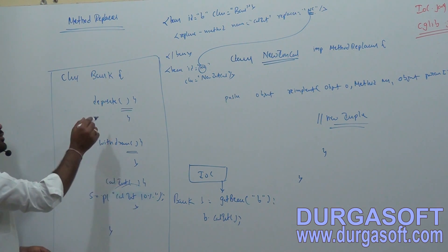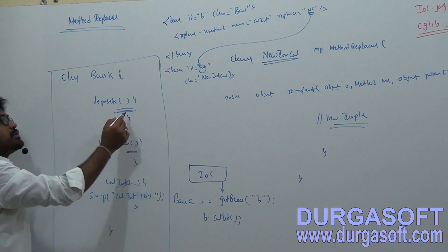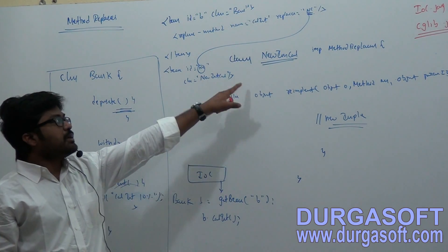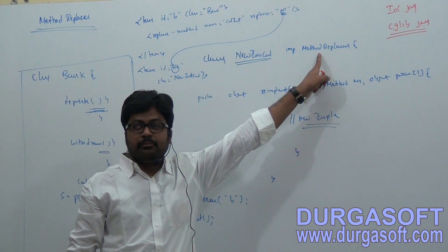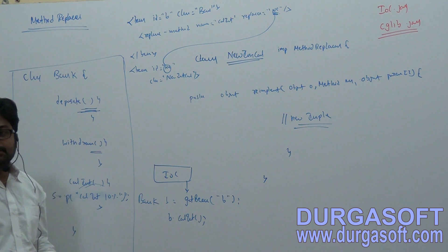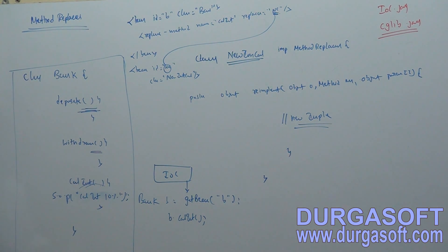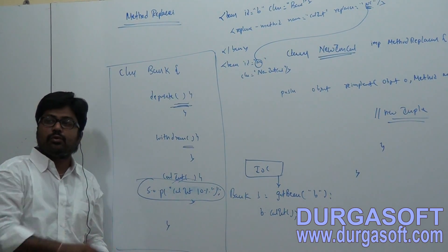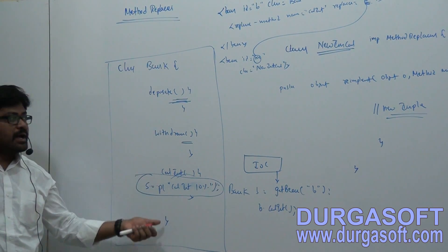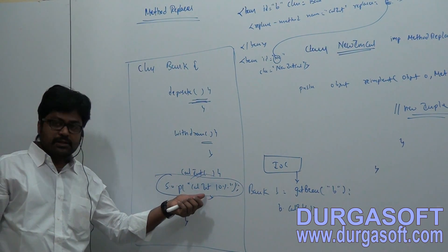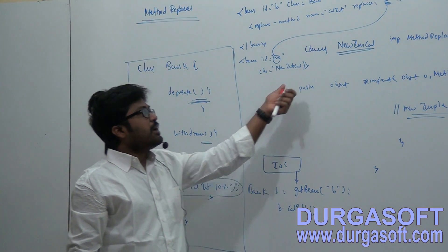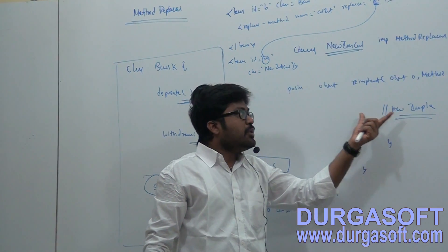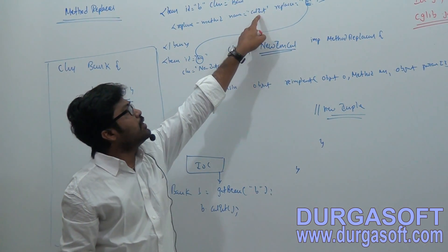If you want to replace any old implementations, by using this replacer tag you can overwrite those old implementations. Your new implementation class must implement from the MethodReplacer interface. If you have an already existing class with some implementations that you want to override, instead of extending that class or overwriting the method inside it, you can implement a separate class from MethodReplacer and write your required new code in it. Then provide that class reference as a replacer to your old method.